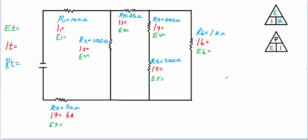Here's a combination circuit. The first thing we want to start off with is to find our total resistance in the circuit.